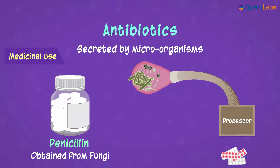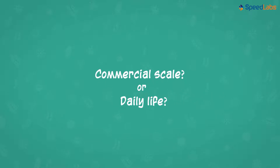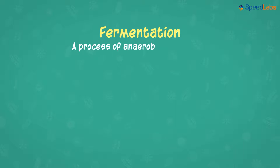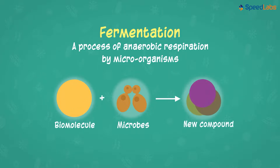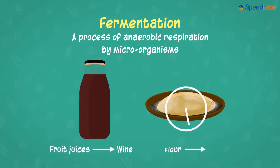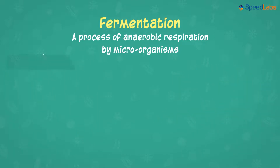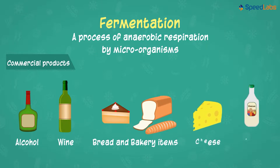Do we have a similar use of microbes on a commercial scale or in our daily life? Yes — several important products which we relish are all because of microbes performing the fermentation process. Fermentation is simply the process of anaerobic respiration by organisms, where microbes utilize biomolecules in the food source and convert them to different compounds in the absence of oxygen. It was discovered long back when fruit juices were fermented to make wine and flour was fermented to make bread. Now we exploit the capacity of several microbes at an industrial level. Alcohol, wine, bread and bakery products, cheese, and vinegar are all made with anaerobic fermentation by microbes like yeast.